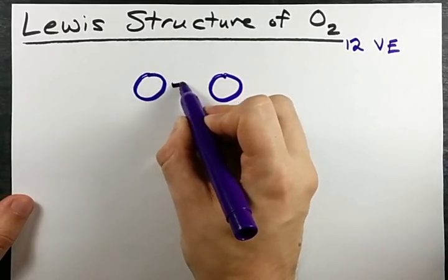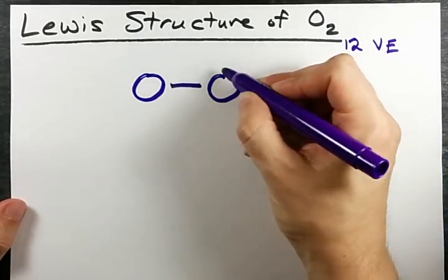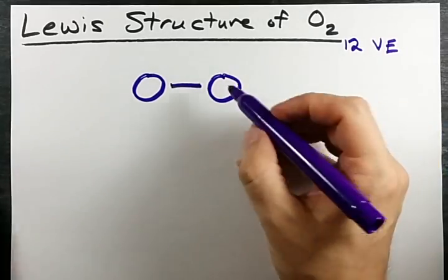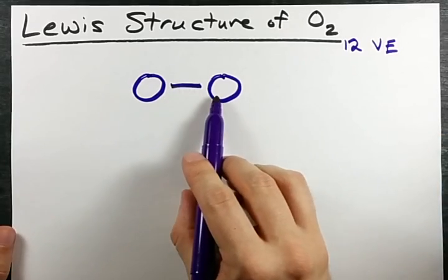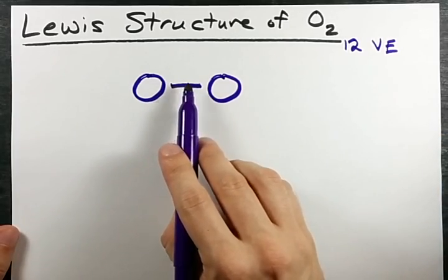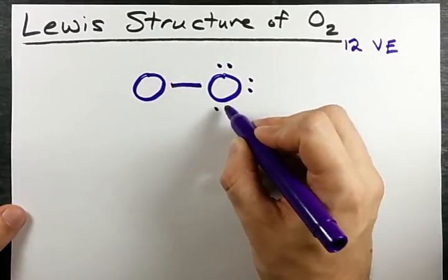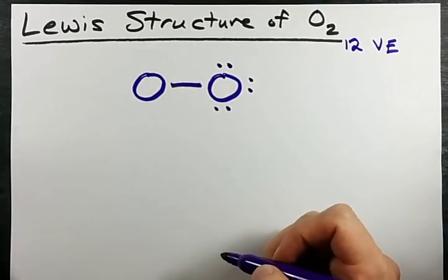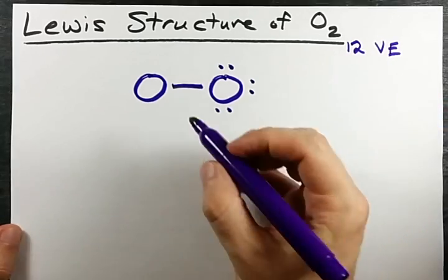The first thing I like doing is connecting the two atoms with a single bond, and then filling my outer atoms according to the octet rule. Each oxygen needs eight electrons total. This oxygen currently has two electrons around it for the bond. Three, four, five, six, seven, eight. It's now full according to the octet rule. But I only have eight electrons in my structure so far, and I need 12.